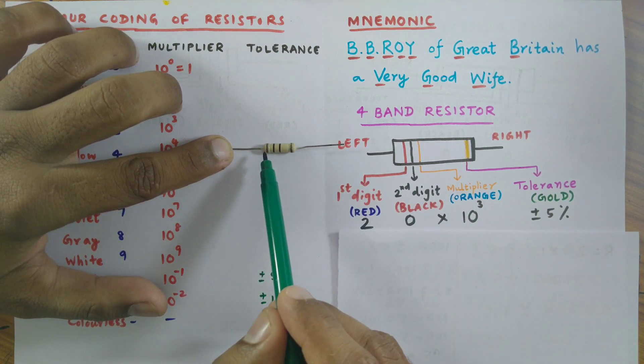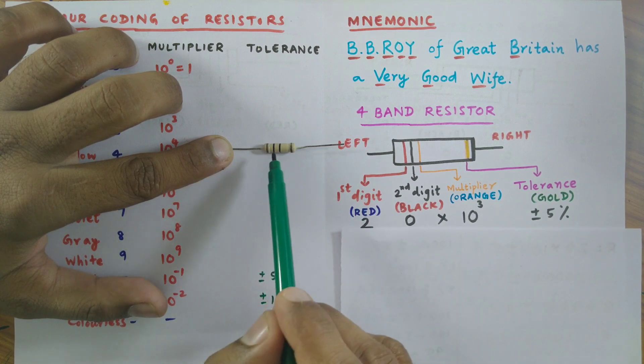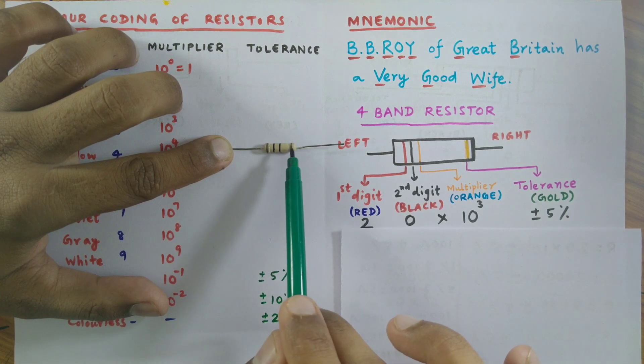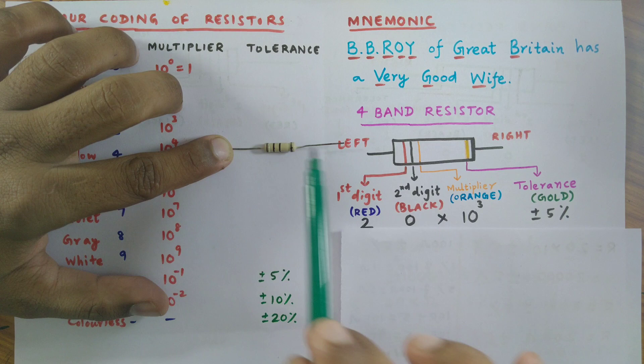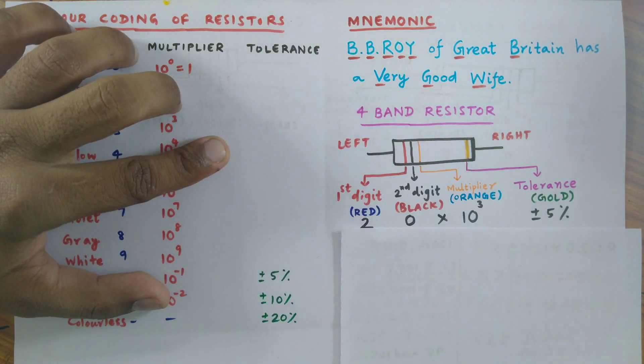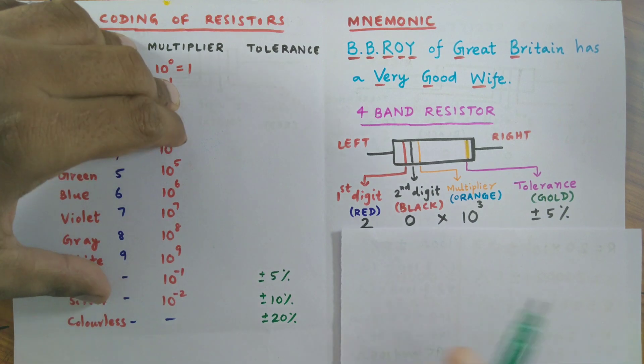Here, the first ring represents the first digit, the second ring represents the second digit, the third ring represents the multiplier, whereas the fourth ring represents tolerance. What is tolerance? I will tell you at the end of this video.